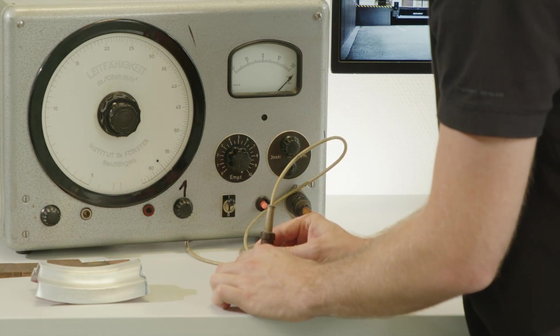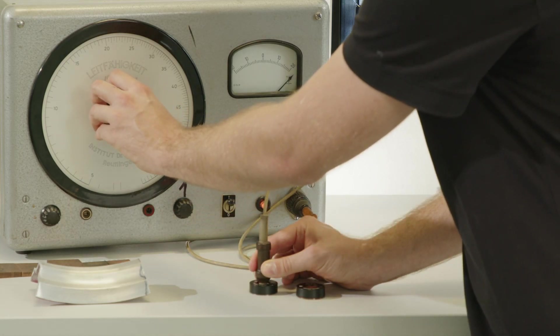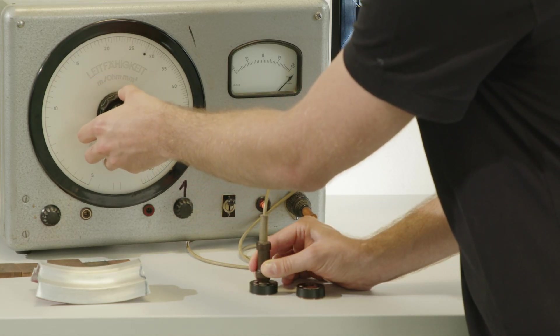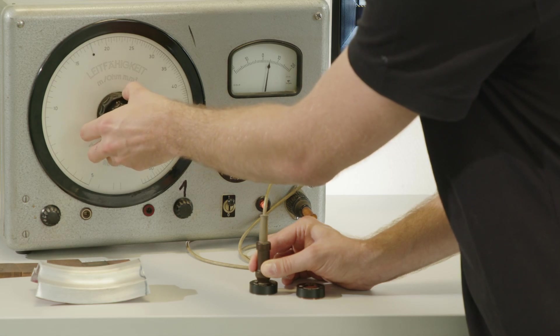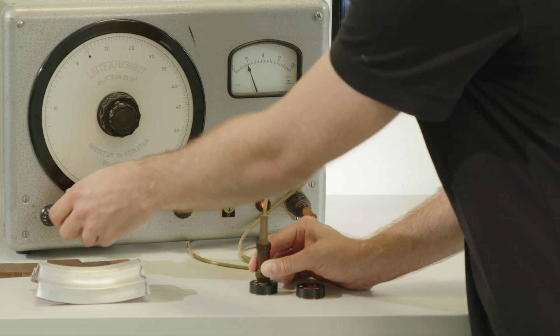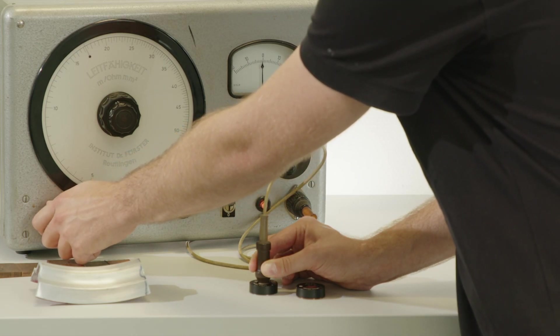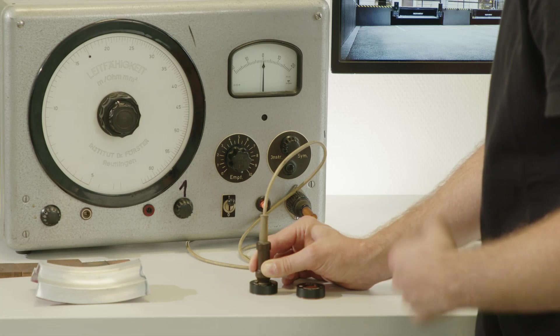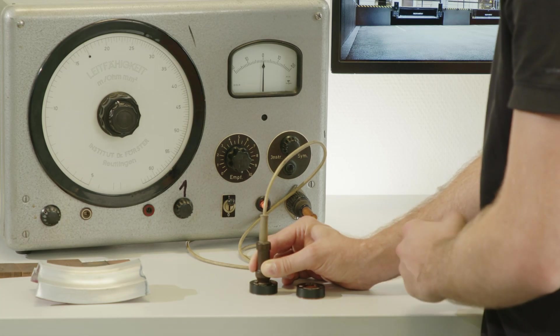The same we do with the aluminium standard. We move the value on, we know it is 17.2 Megasiemens. So 17.2. We move it to zero and okay, now our system is calibrated and we are ready for measuring.